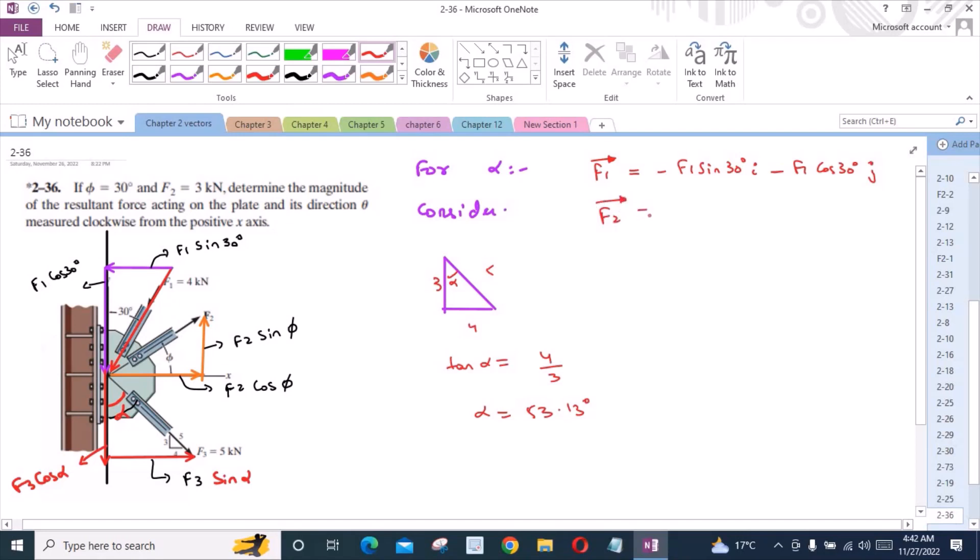Now, for the force F2, F2 cos phi, and phi is 30 degrees. So we have F2 cos 30 i plus F2 sin 30 j.